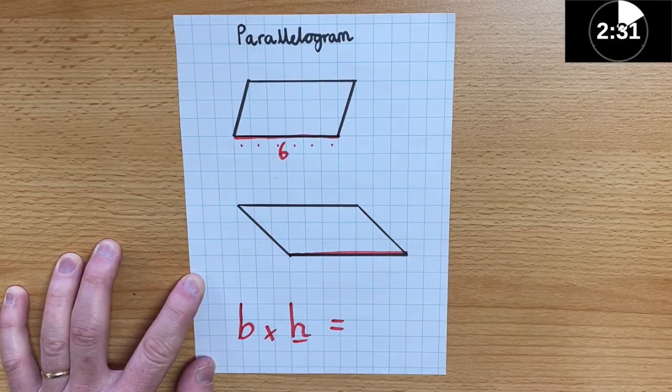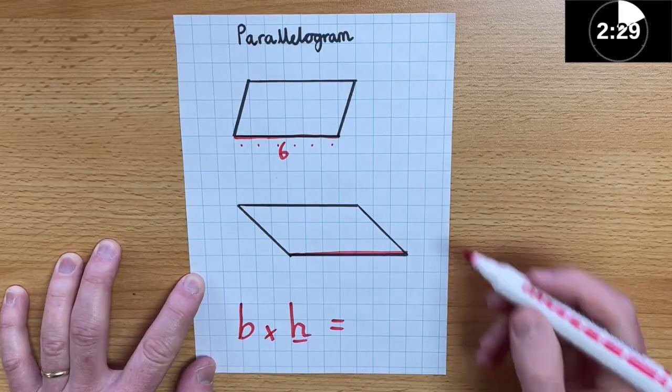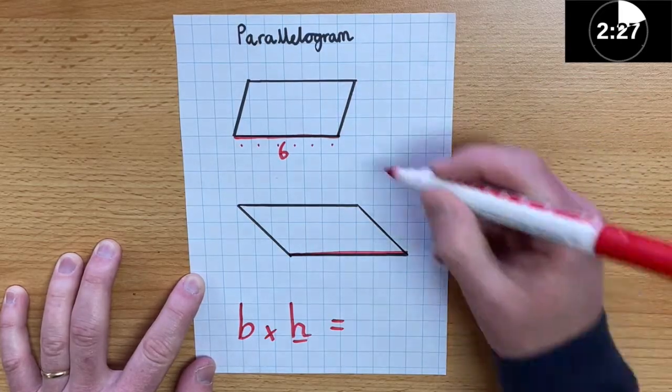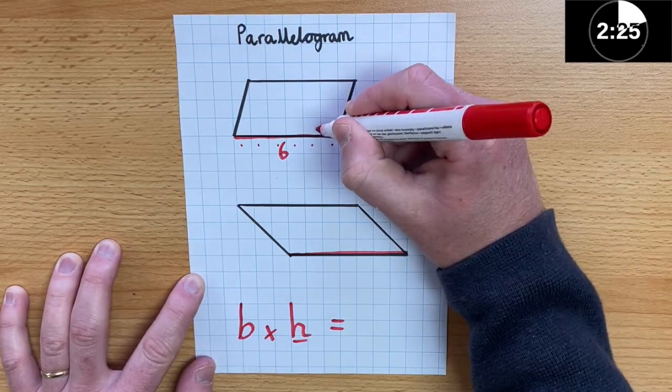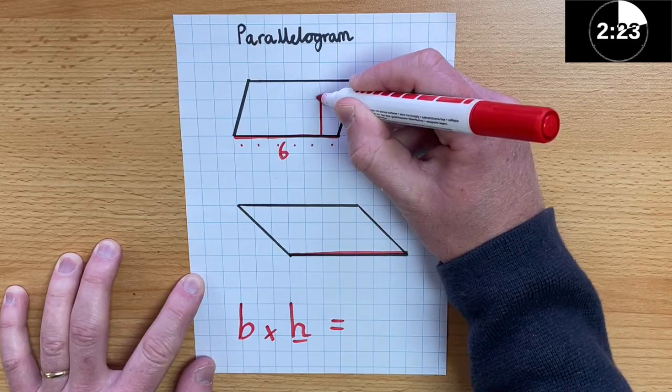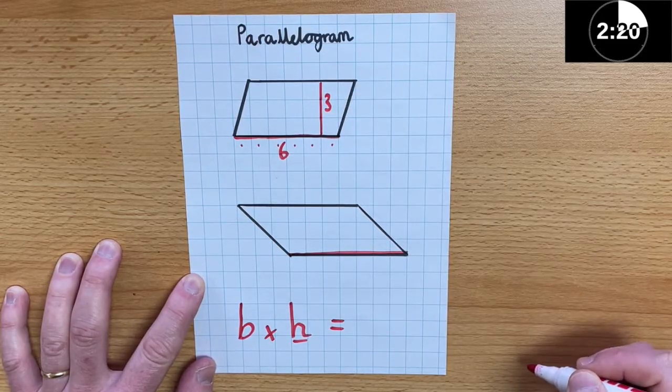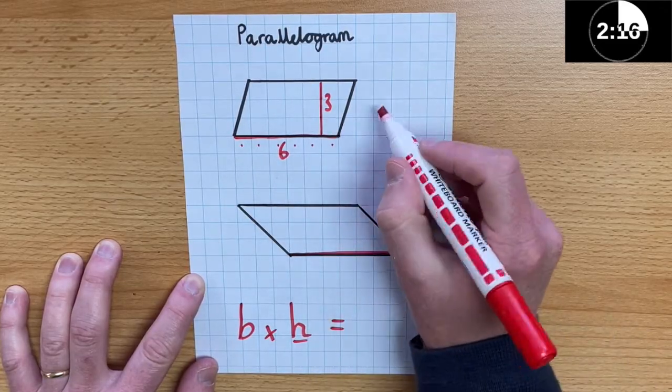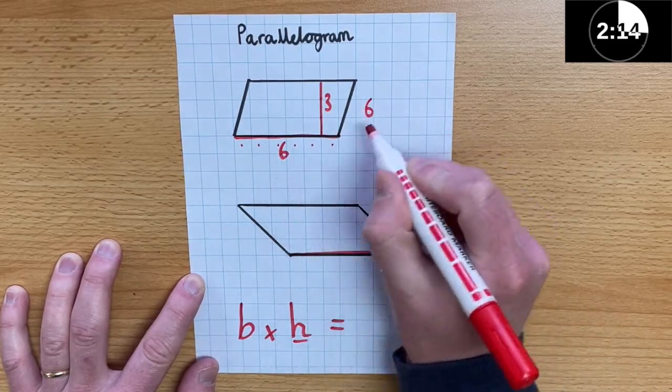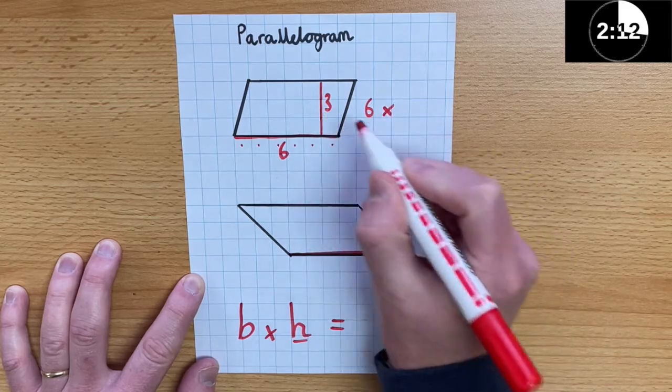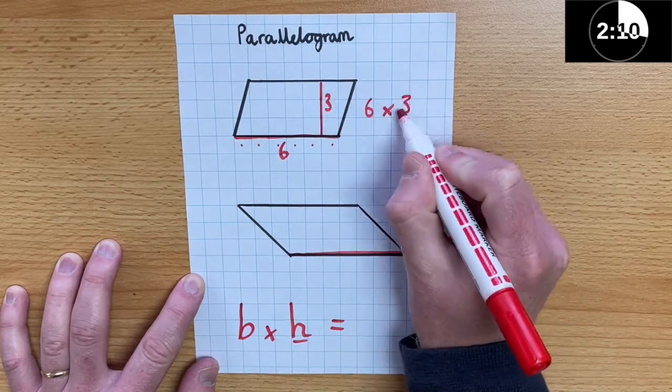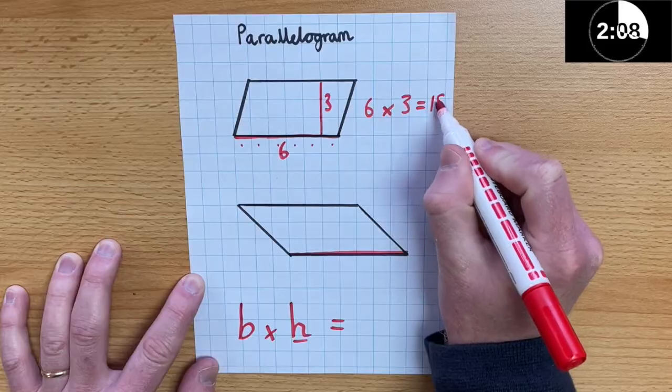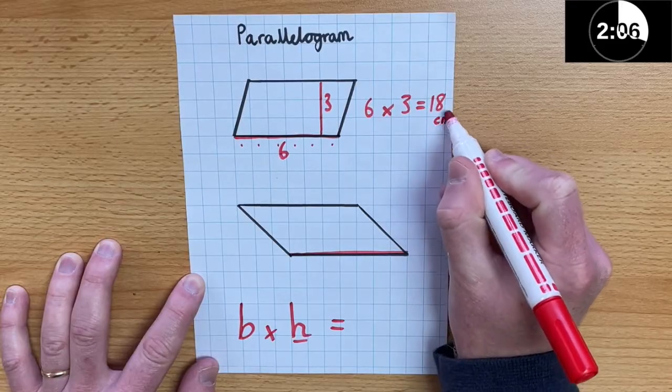Now I need to find out the height. Well, the height is how tall something is. I can see that this parallelogram is 1, 2, 3, 3 centimeters high. So, to work out the area of this parallelogram, I would have to do the base, which is 6, multiply the height, which is 3, and that would be 18 centimeters squared.